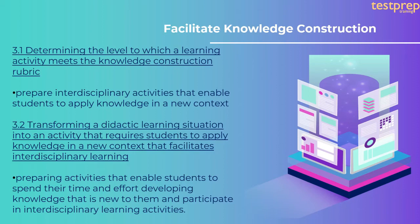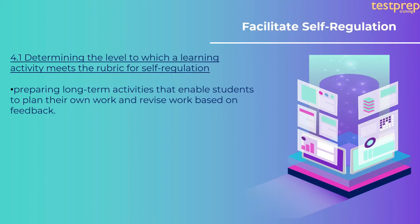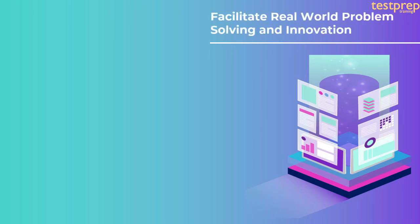It contains preparing activities that enable students to spend their time and effort developing knowledge that is new to them and participate in interdisciplinary learning activities. Fourth, facilitate self-regulation. 4.1 determining the level to which a learning activity meets the rubric for self-regulation — preparing long-term activities that enable students to plan their own work and revise work based on feedback. 4.2 verifying which opportunities facilitate an environment of self-regulation: first, providing students with opportunities to set their learning goals; second, deciding on the best strategies to achieve these goals; third, monitoring to see if these strategies are working.